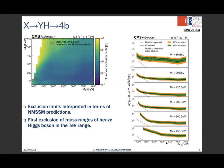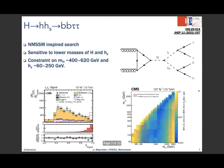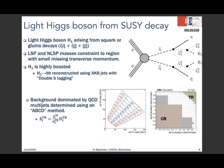A related published search in the bb tau tau final state targets the same X→Yh topology, where the SM Higgs goes to tau tau and the unknown resonance Y goes to bb. This covers a different mass range — lower mX and higher mY — and the interpretation is again MSSM, with some exclusion at lower mass.